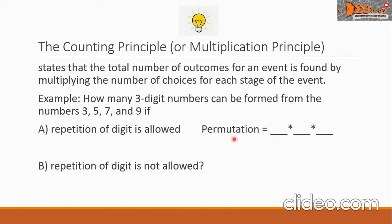Let us solve for problem A. We write three blanks to represent the three-digit number. Each blank represents the number of choices for each stage. For the first blank, there are four choices. Since repetition is allowed, the second blank also has four choices, and the third blank has four choices as well. Multiplying: 4 times 4 times 4 equals 64. There are 64 three-digit numbers.